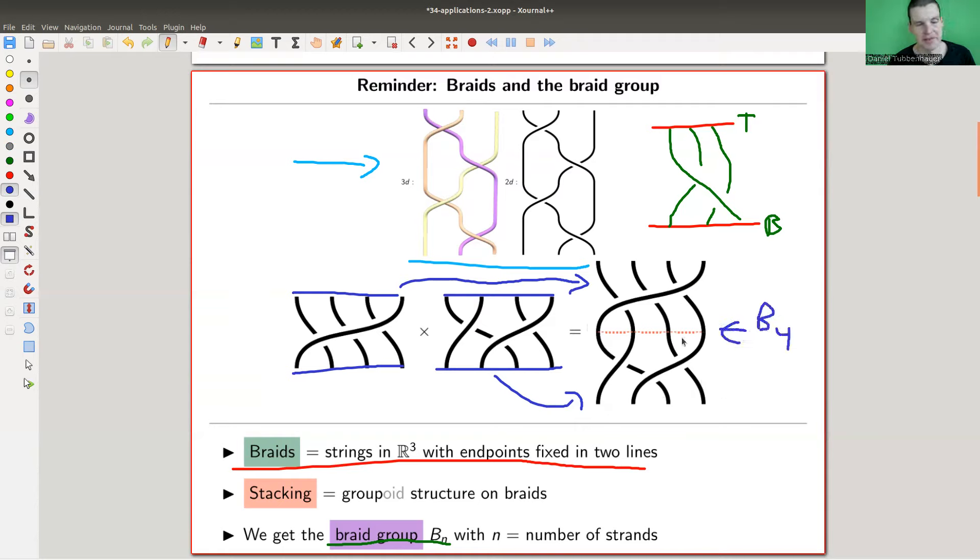I get a new braid by just gluing them along the common boundary. This would be an element of B4, the braid group in four strands, because I have four strands. And why is it a group? Well, you have a composition law, and you can easily find an inverse. The inverse of this picture would be something like this, because you could just pull it down straight and have the unit, which is just straight lines. So this is the braid group, topologically defined group, very useful.